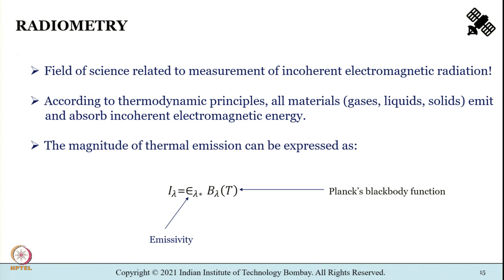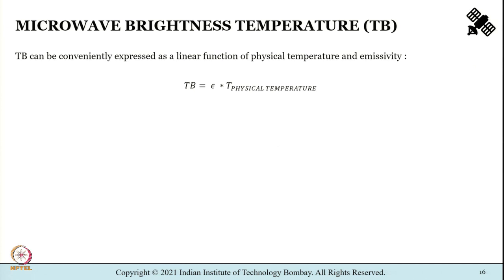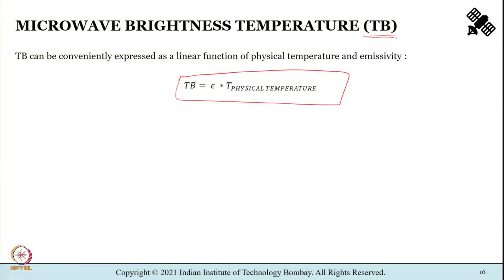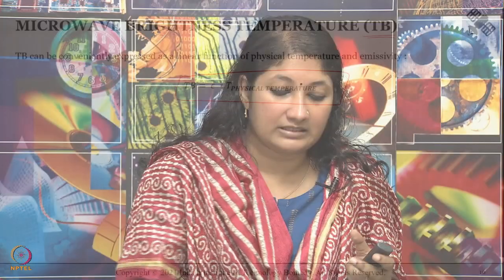By approximating the thermal emission from the Planck function using the Rayleigh-Jeans formula, the microwave brightness temperature TB can be conveniently expressed as a linear function of physical temperature and emissivity. Emissivity is a complex function of dielectric constant whose values are well known for gases and calm water, but not so well defined for rough water and land surfaces.